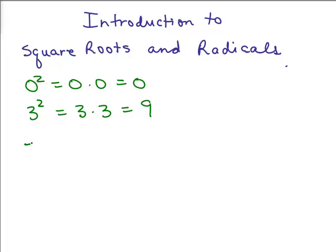Let's say we have a number in parentheses squared like negative 2. That would be negative 2 times negative 2, which is positive 4. So remember when you're squaring a negative number, it's going to be positive.